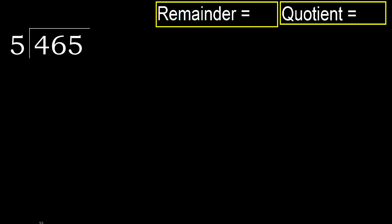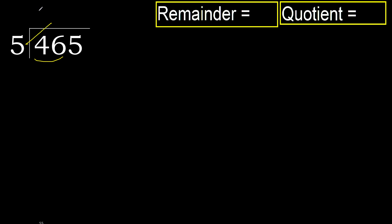465 divided by 5. 4 is less, so next we look at 46. 46 is not less. 5 multiplied by which number is nearest to 46 but not greater? 5 multiplied by 9 is 45, which is not greater.